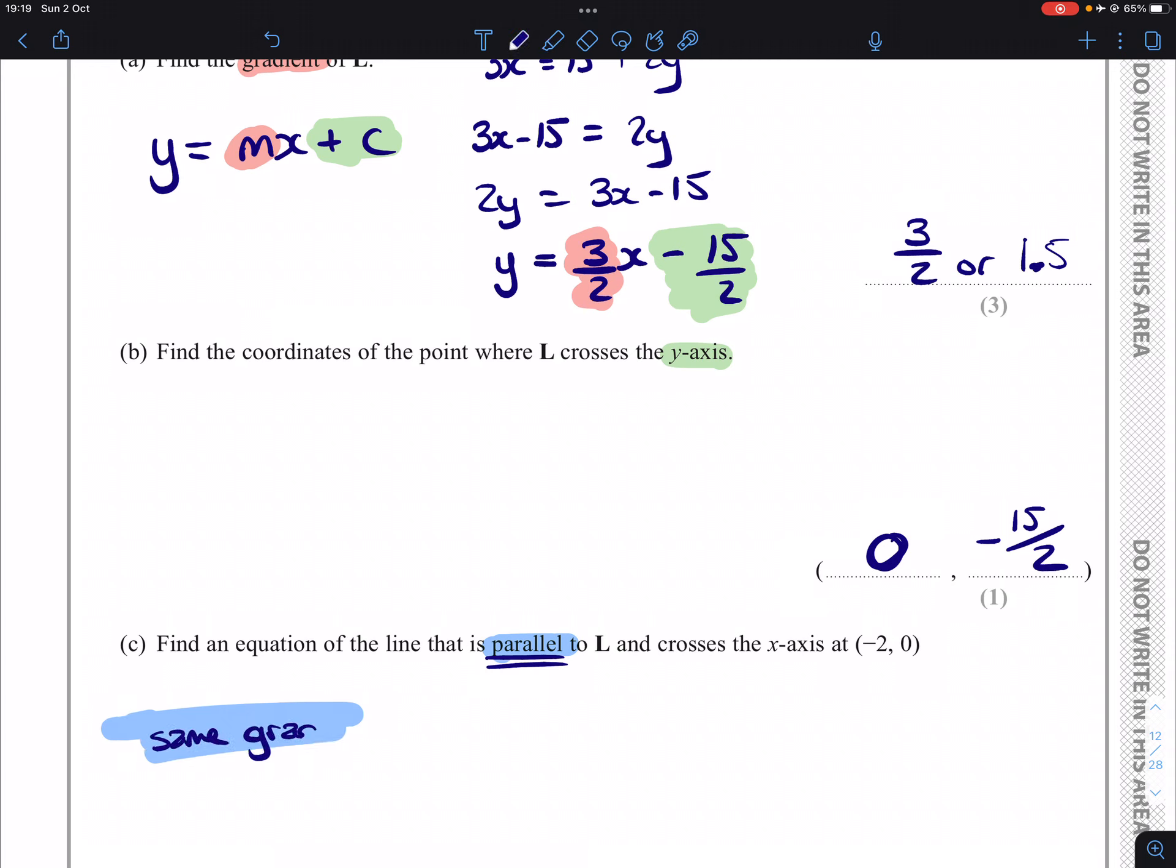Which means our m is also going to be 3/2 for our question. And we have been given a point on the line (-2, 0). So we've been given an x is -2 when y is 0.